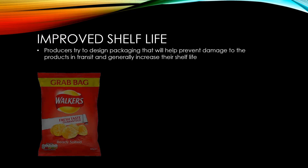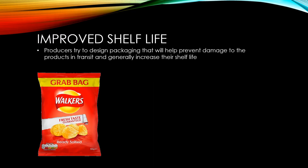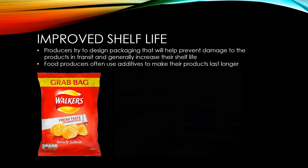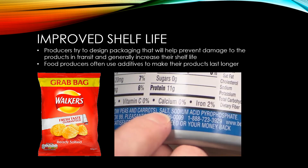Producers try to design packaging that will help prevent damage to their products during transit and generally increase the shelf life of those products. Food producers often use additives to make their products last longer. If shelf life has improved, it's easier to store the product and have it ready to supply if prices increase.